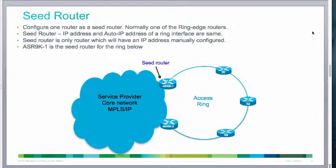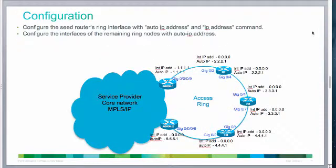The seed router interface connecting to the ring will have a priority of 2 and will start to kick off the IP address assignment process across the whole ring network. Usually one of the edge nodes of the ring is selected as the seed router, and here in the demo topology I'm selecting ASR9K1 as the seed router.